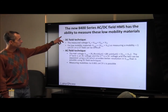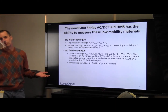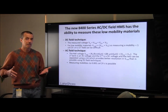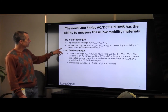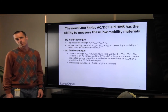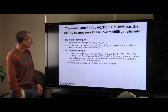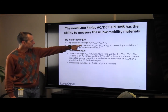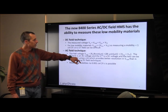Lakeshore's new 8400 series Hall Effect measurement systems are capable of doing both DC field measurements and a novel AC field technique. In a DC field technique, it can be very difficult to measure very low mobility. The voltage that you measure, V sub M, is equal to the Hall voltage — this is what you want — but there are also offset voltages present.